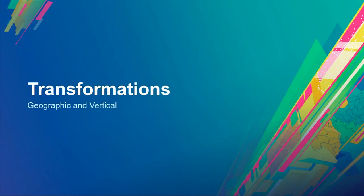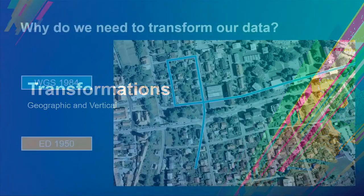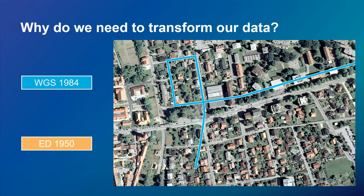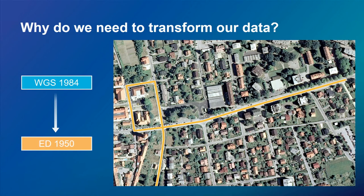Now into our final section: transformations. Why do we need to transform our data? Here, a base map is in an older GCS called ED50 — European Datum 1950 — and we have a route in WGS84. The route is running through buildings and yards, definitely not lining up with the street network. After applying a transformation from WGS84 to ED50, the route suddenly lines up with the base map.